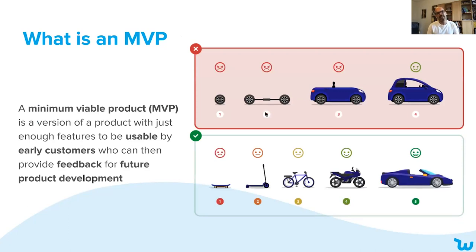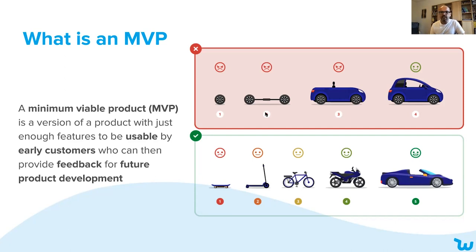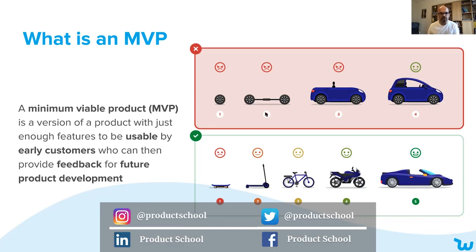So what is an MVP? Here's a definition I found on the web which captures the essence of it. An MVP, or minimum viable product, is a version of a product with just enough features to be usable by early customers who can then provide feedback for future product development. There's a lot to unpack here, and this graphic does a pretty good job of illustrating it. Let's say your objective is to build a car — something which takes people from point A to point B.